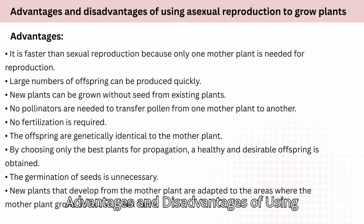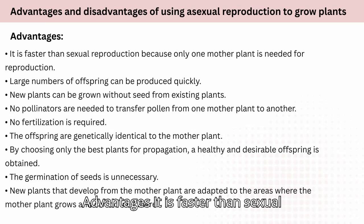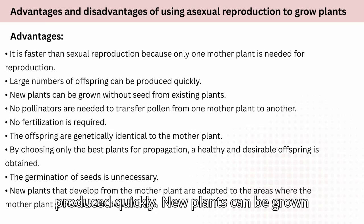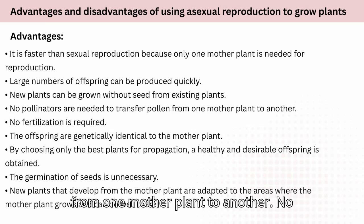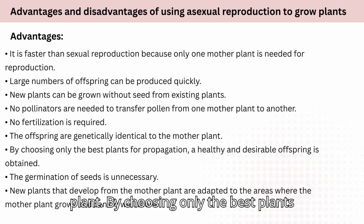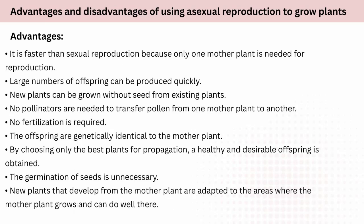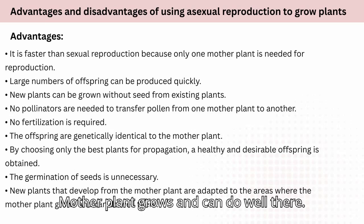Advantages of using asexual reproduction to grow plants: it is faster than sexual reproduction because only one mother plant is needed. Large numbers of offspring can be produced quickly. New plants can be grown without seed from existing plants. No pollinators are needed, and no fertilization is required. The offspring are genetically identical to the mother plant. By choosing only the best plants for propagation, a healthy and desirable offspring is obtained. Seed germination is unnecessary. New plants are adapted to the area where the mother plant grows.